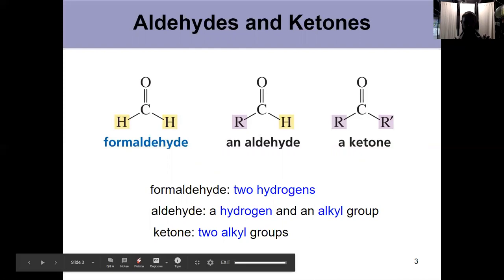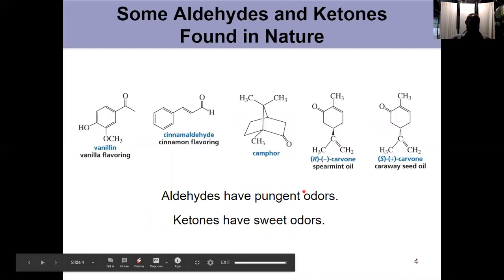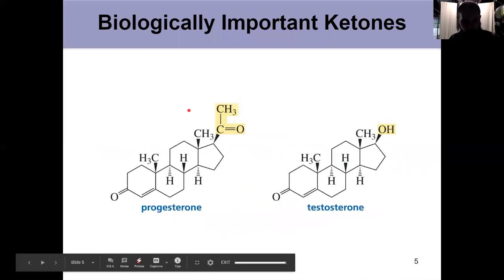The simplest one where we get a hydrogen on both sides is formaldehyde. These things are common in nature. Here are a couple of examples from your textbook—they have some pretty significant odors. We worked with vanillin in the lab in organic one. They're common in nature and also common in our bodies. Look at these two hormones: progesterone and testosterone. Just a subtle difference there—taking the alcohol from testosterone and turning it into a ketone gives it a very different role in the human body. Just that little tweak in a molecule shows the biological importance of ketones and aldehydes.